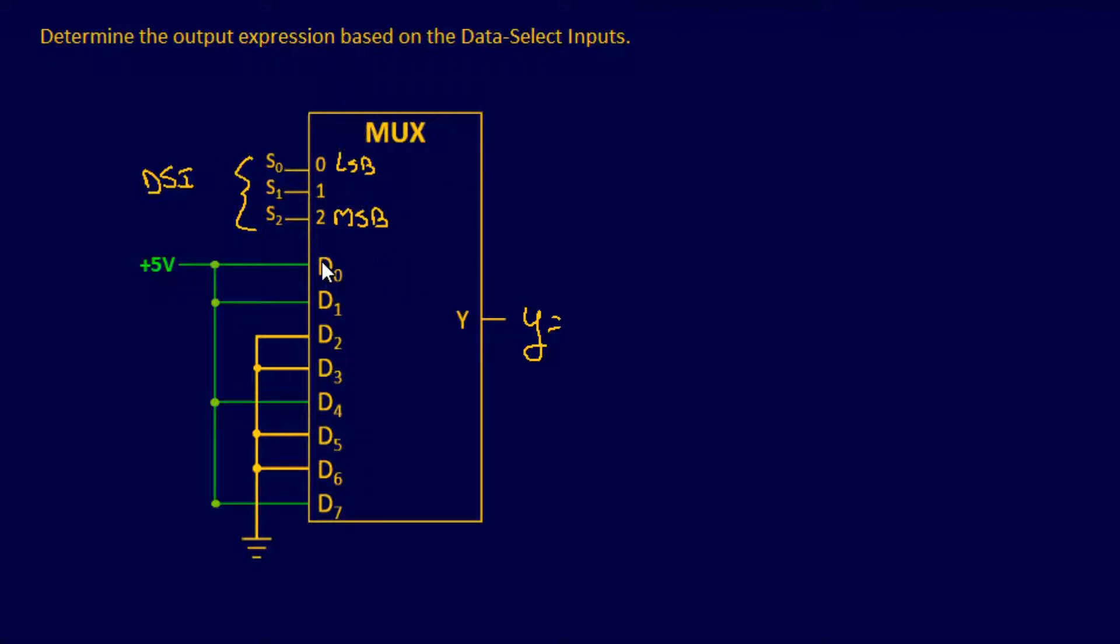Right now we have data inputs, which is d0, d1, d4, and d7. They're going to give us a high output because it has 5 volts. d2, d3, d5, d6 is grounded, which is going to give us a 0 input.